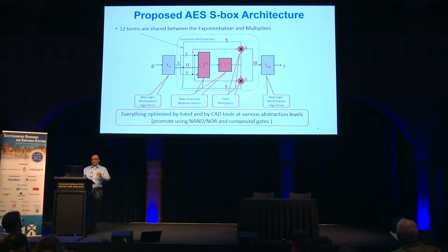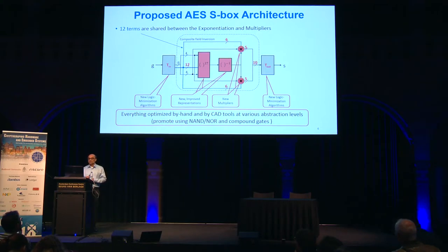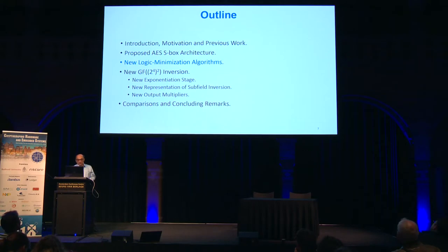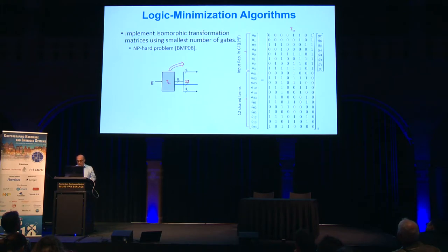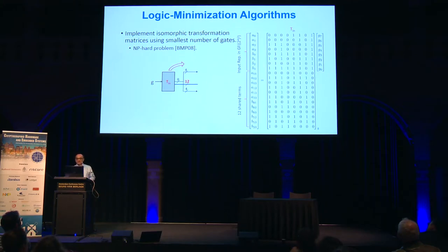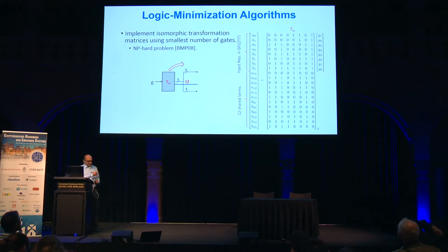Now I'm going to talk about the logic minimization algorithm we propose. We define the logic minimization algorithm to implement the isomorphic transformation matrices using a small number of gates. It's a hard problem, and we have two transformation matrices — one at the input and one at the output. That figure shows only the input transformation matrix. These are the optimum results of the input transformation matrix, which has eight inputs and 20 outputs. The 12 additional outputs are shown here.